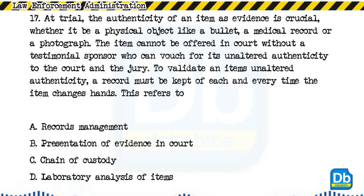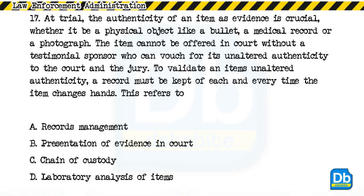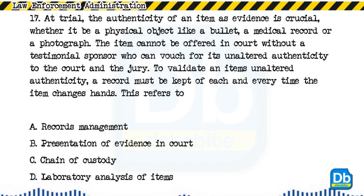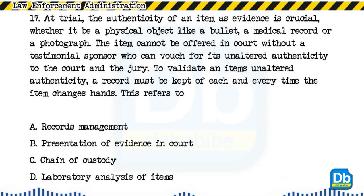Question 17: At trial, the authenticity of an item as evidence is crucial. The item cannot be offered in court without a testimonial sponsor who can vouch for its unaltered authenticity. A record must be kept of each and every time the item changes hands. This refers to: a) records management, b) presentation of evidence in court, c) chain of custody, d) laboratory analysis of items. The answer is A, records management.